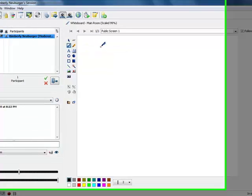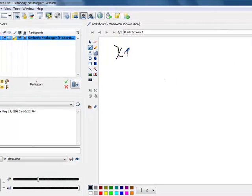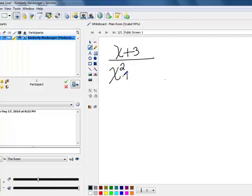Okay, we have x plus 3 over x squared plus 4x plus 3, and we're subtracting from that x minus 2 over x squared minus 9.